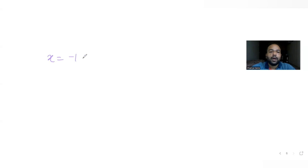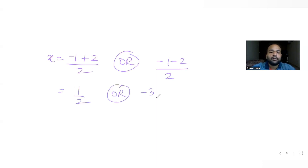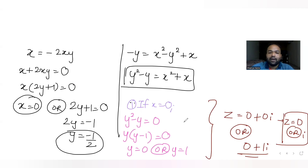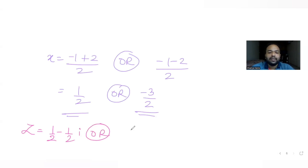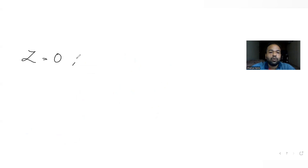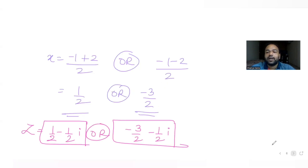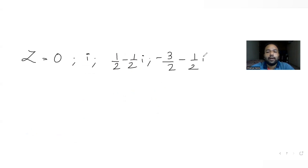Solving the quadratic, x equals (minus 1 plus 2)/2 equals one half, or x equals (minus 1 minus 2)/2 equals minus three halves. So with y equals minus one half, we get two more complex numbers: z equals one half minus one half·i, and z equals minus three halves minus one half·i. In total we have four complex numbers: 0, i, (1/2 − i/2), and (−3/2 − i/2).